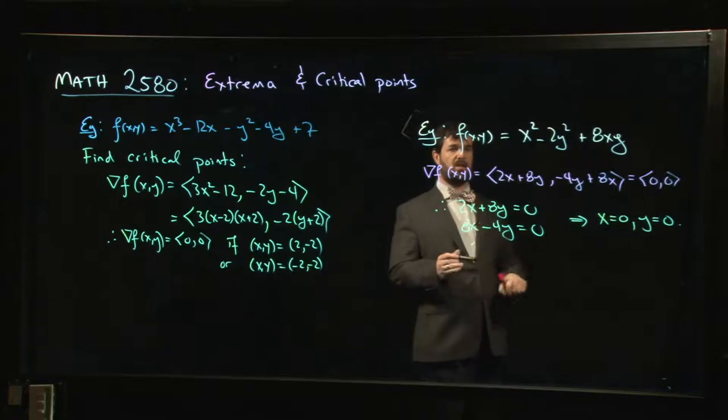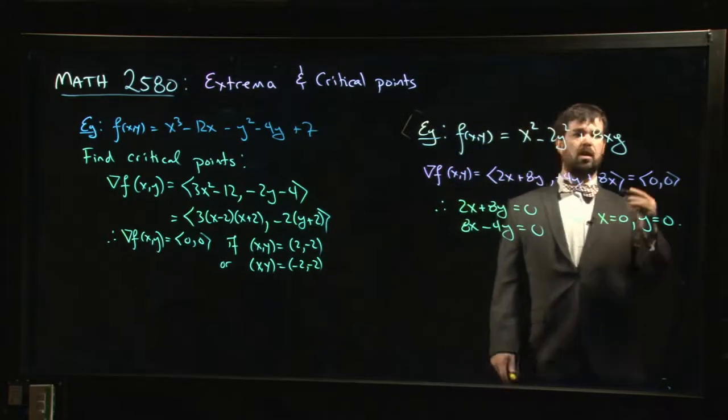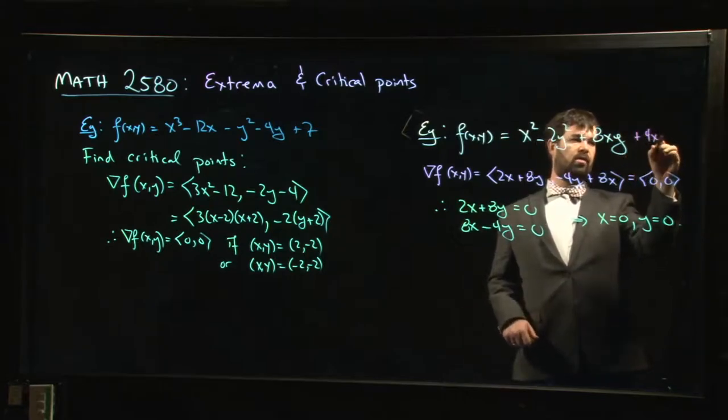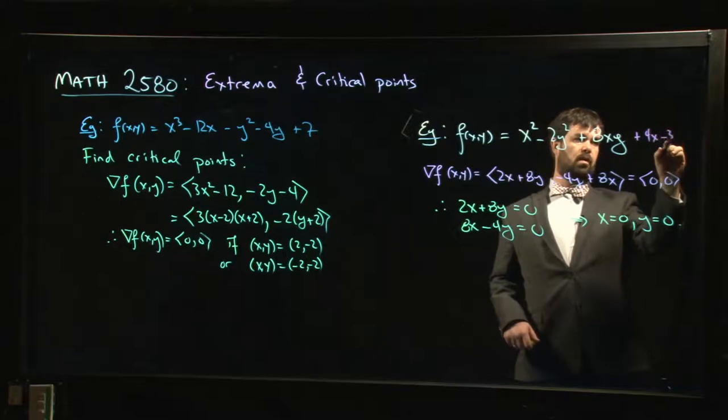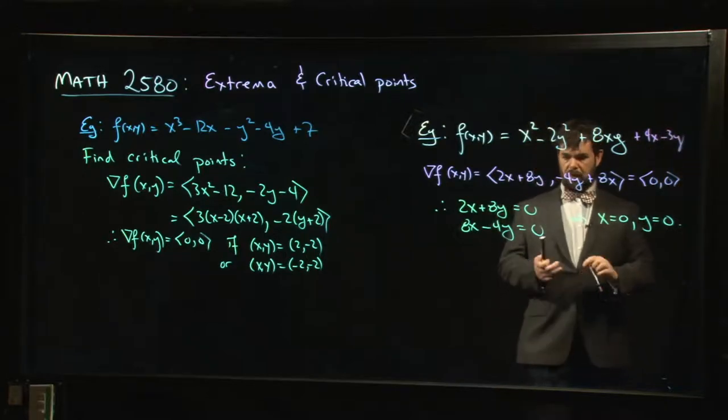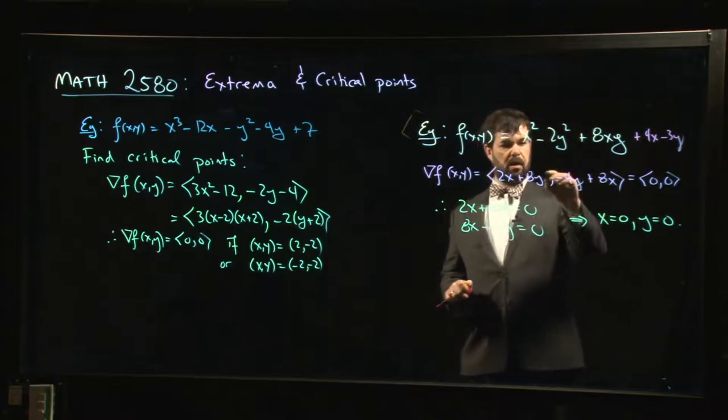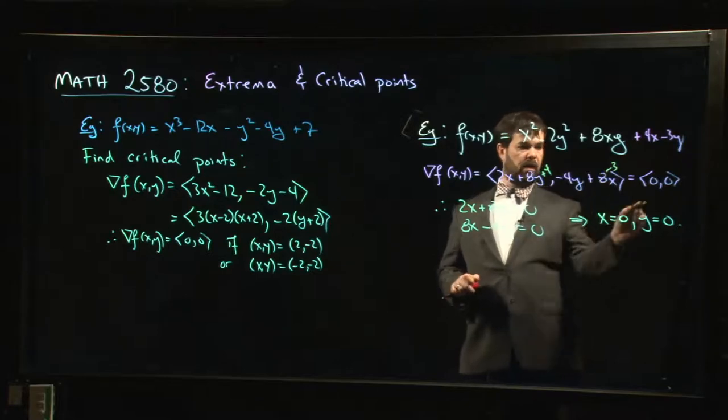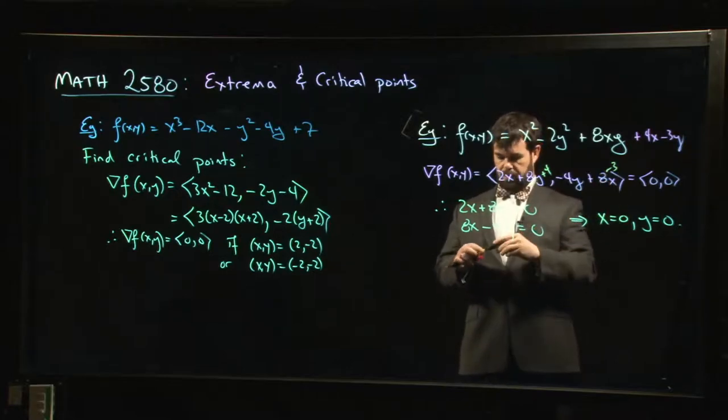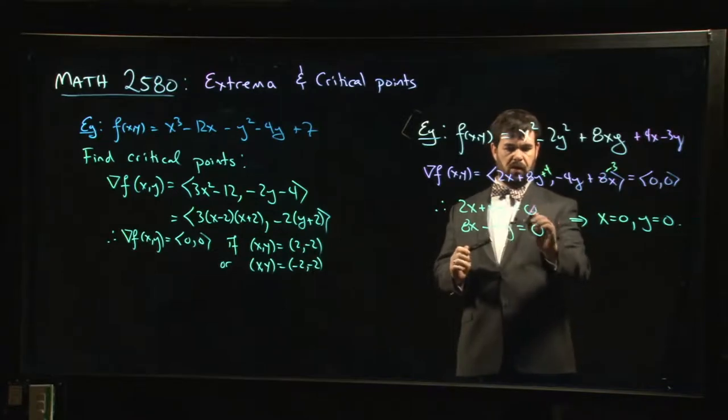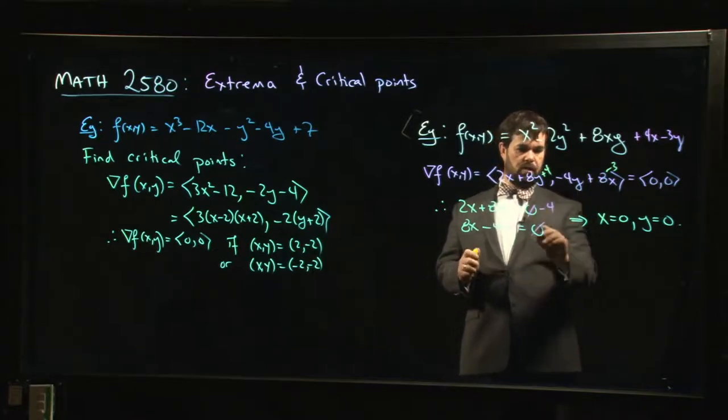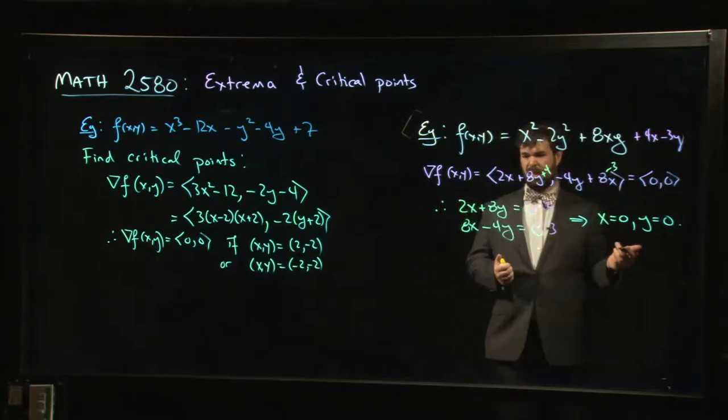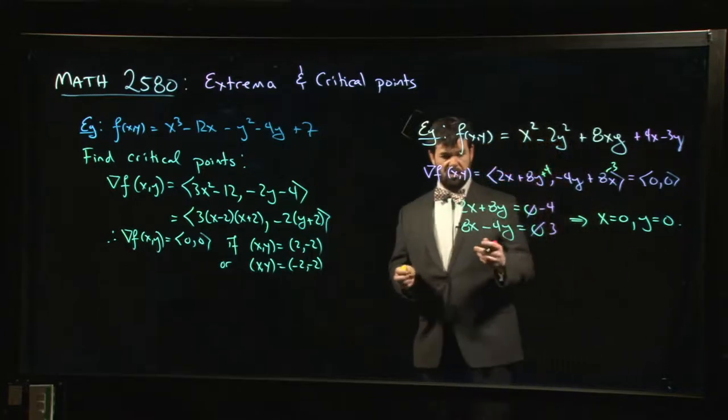If we wanted to make things slightly more challenging, we could throw in terms like, let's just put in like a 4x and maybe a 3y in there. And then, well, that makes things trickier because now I've got a +4, I've got a -3. And then when I set these both equal to 0, well, then this 0 becomes a -4. This becomes a +3. Move the constants over.